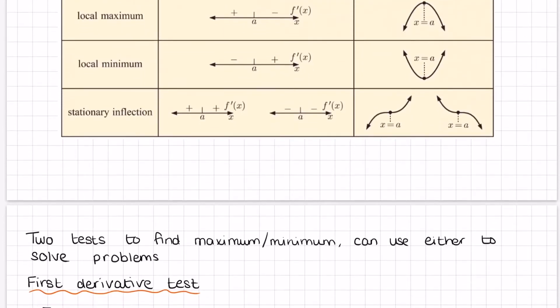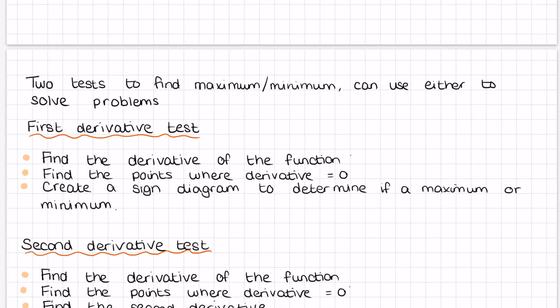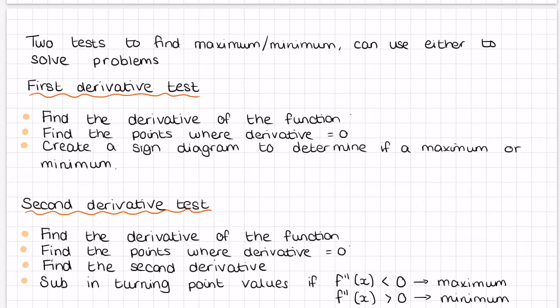To find if things are a maximum or a minimum, there are two tests: the first derivative test or the second derivative test. The first derivative test is pretty much exactly what we did in the last lesson with finding increasing or decreasing. You find the derivative of the function, find where it equals zero, and create a sign diagram to find out if it's a maximum or a minimum.